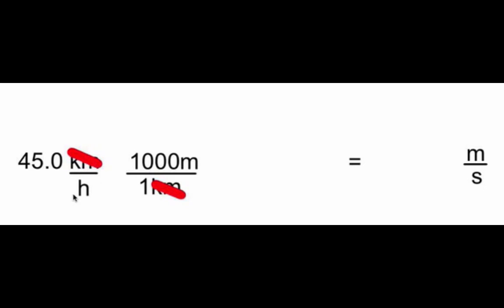I've got hours on the bottom, I don't want hours, I want to have it in seconds, so I'm going to bring up this ratio, which is 1 hour over 3,600 seconds, because that is still just the number 1, there's 3,600 seconds in 1 hour. Cross off my hours on the bottom with my hours on the top, and if we take a look now,